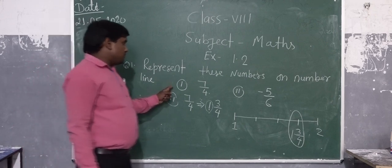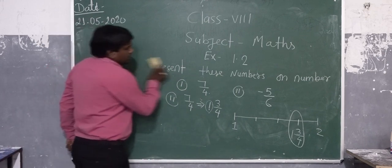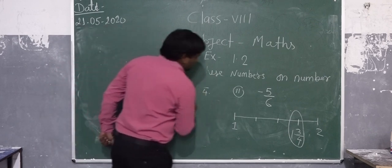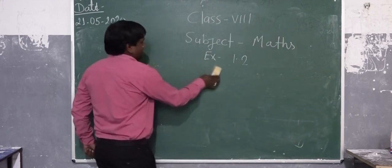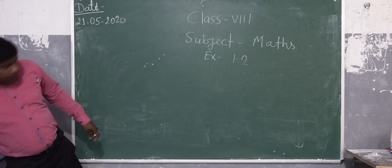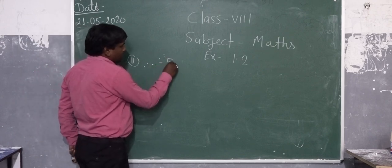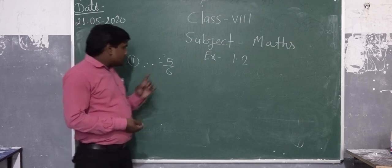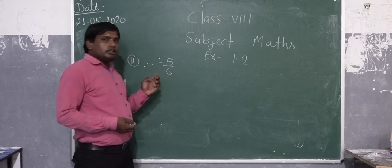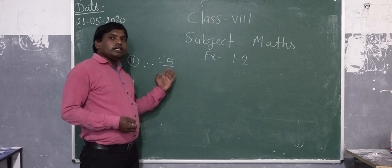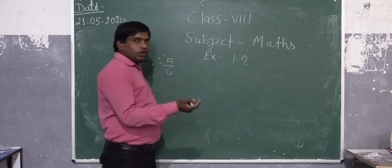This is the first part of the question. Now I am going to solve the second part of the question, which is minus 5 by 6. First of all, we check the numerator and denominator. Here the denominator is greater than the numerator, and the number has a minus sign, so it lies between 0 and minus 1.